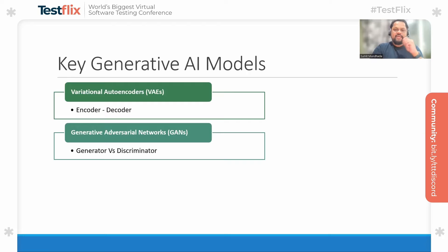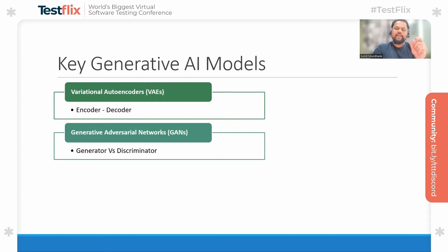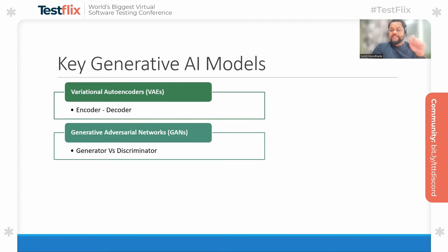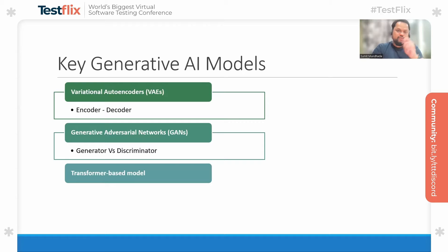Another key generative AI model is the generative adversarial network, popularly called GAN. This model uses the concept of a generator and a discriminator, where the generator tries to create sample data — or tries to fool the discriminator. On the other hand, the discriminator tries to evaluate and distinguish the sample data created by the generator, or give feedback back to the generator. Taking a gaming analogy, both generator and discriminator are in competition with each other, and they do this repeatedly during the training phase.